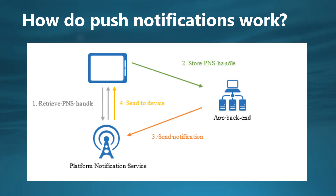The client app stores this handle in the app backend or provider — that is the second step, store PNS handle. To send a push notification, the app backend contacts the PNS using the handle to target a specific client app — that is the third step, highlighted in orange. Finally, in step four, the PNS forwards the notification to the device specified by the handle.